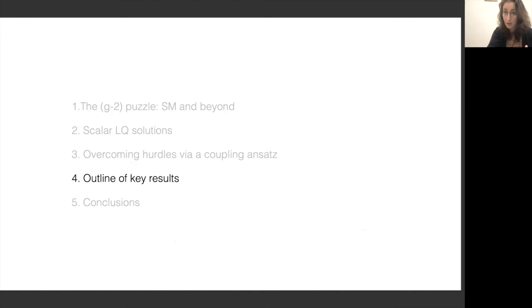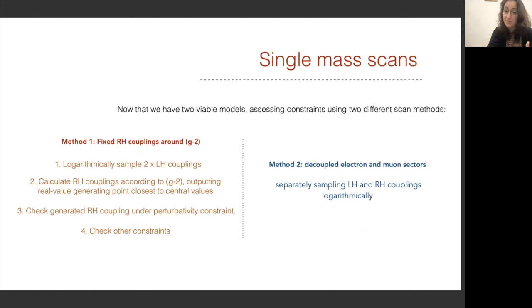Let me outline for you now a couple of key results. Now that we have two possible viable models, the S1 and the R2 model, we now assess constraints using two different scan methods. The first is to always generate contributions that fit within one sigma of the allowed g-2 of the electron and the muon. The way we do this is we logarithmically sample over left-handed couplings and we calculate the right-handed couplings according to the g-2 expressions that were shown on the previous page. We then output real valued points and we generate the one that's closest to giving the central value of the g-2. We then check the generated coupling against a perturbativity constraint and then proceed to check other constraints.